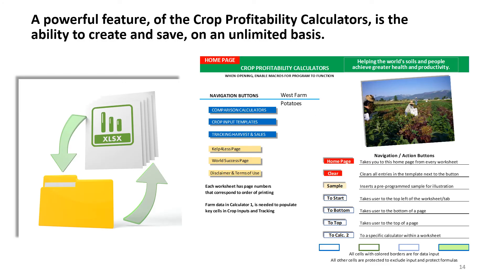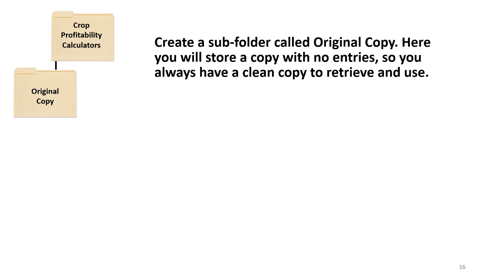A powerful feature of the Crop Profitability Calculators is the ability to create and save on an unlimited basis. Begin by creating a Crop Profitability Calculator folder, then create a subfolder called Original Copy. Here you will store a copy with no entries, so you always have a clean copy to retrieve and use.